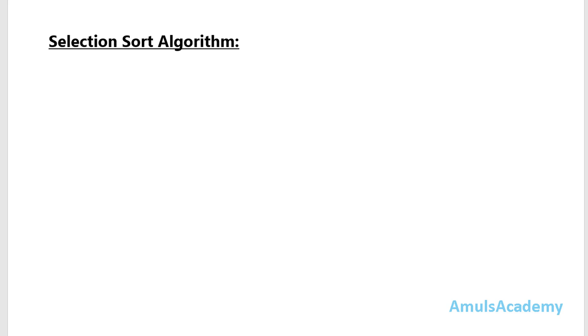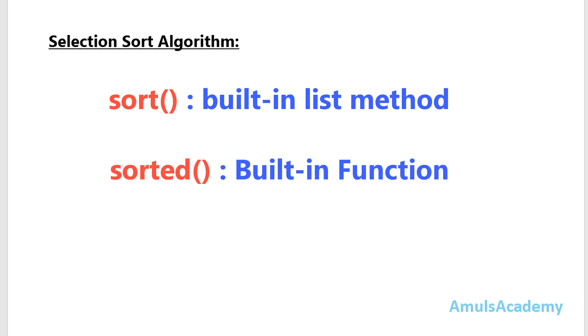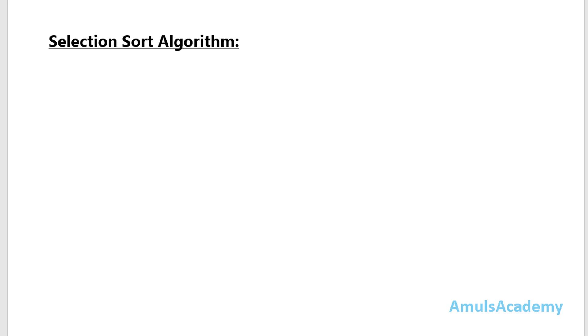Hello guys and welcome to Python programming tutorials by Amuls Academy. Previously in this video series we were discussing about sorting, and we discussed about the sort and sorted functions. Those are built-in functions where we just give a list of numbers. But we can also write a program to sort numbers without using those built-in functions. There are many sorting algorithms, and today we are discussing about the selection sort algorithm.